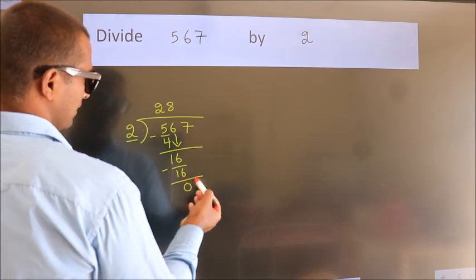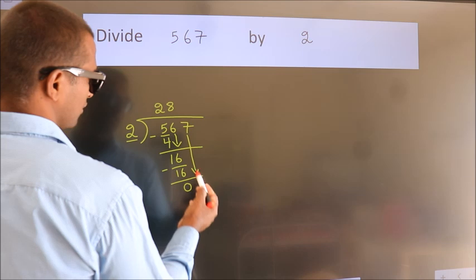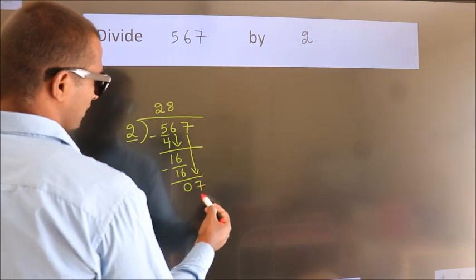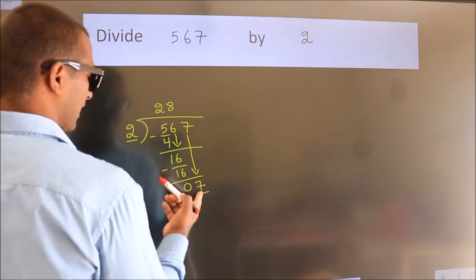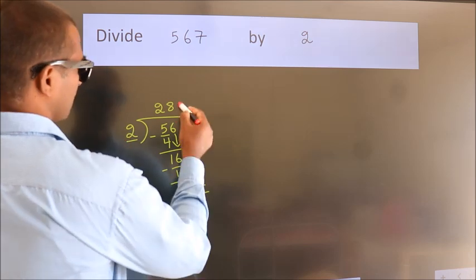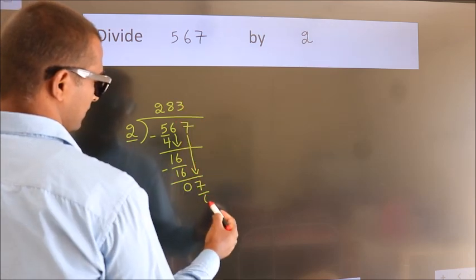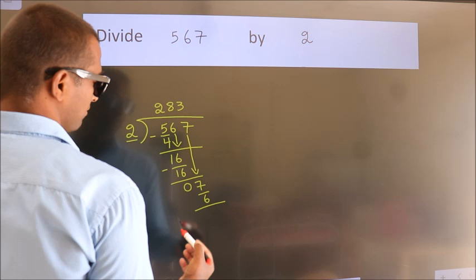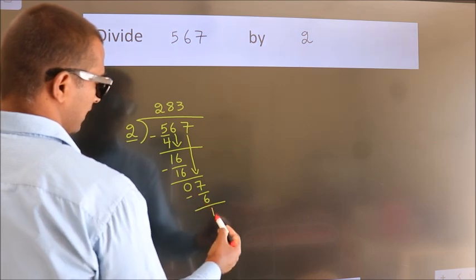After this, bring down the beside number. So 7 down, so 7. A number close to 7 in the 2 table is 2 times 3, which is 6. Now we subtract. We get 1.